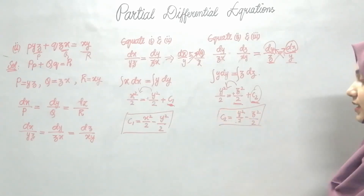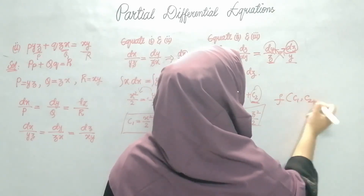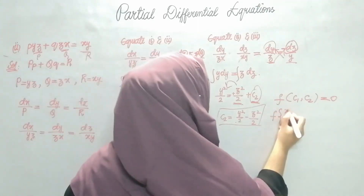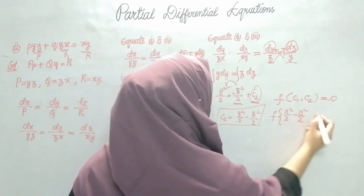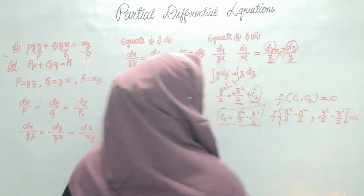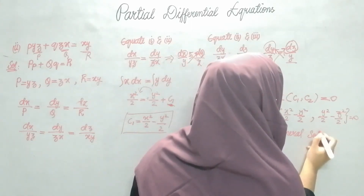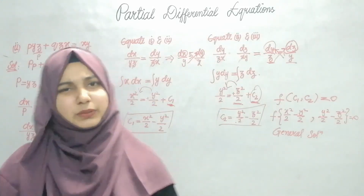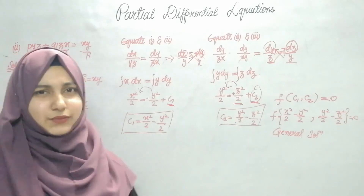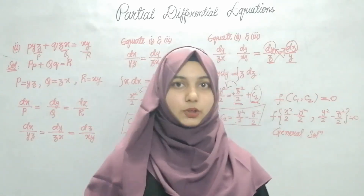I got both values: C1 = x²/2 − y²/2 and C2 = y²/2 − z²/2. The general solution is F(C1, C2) = 0, so: F(x²/2 − y²/2, y²/2 − z²/2) = 0. That is the general solution. The method of grouping in Lagrange's equation is very easy. If you try it once or twice you will get it. In the next video we will see the Method of Multipliers.